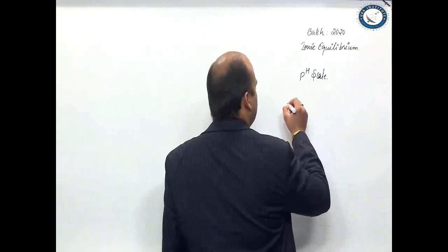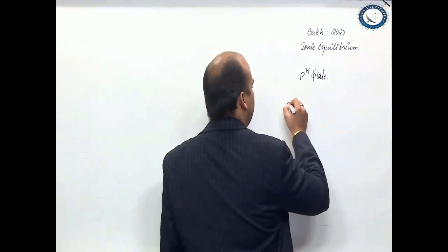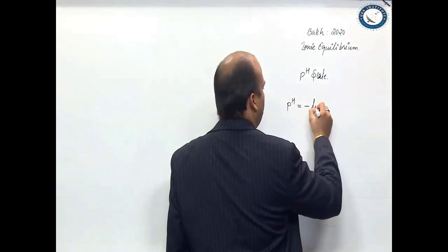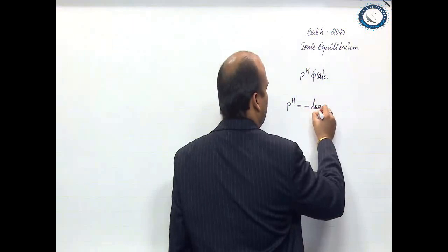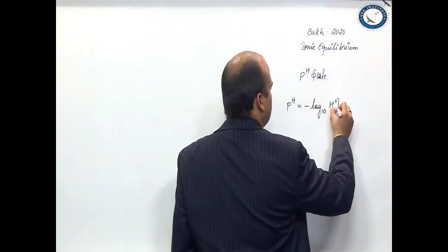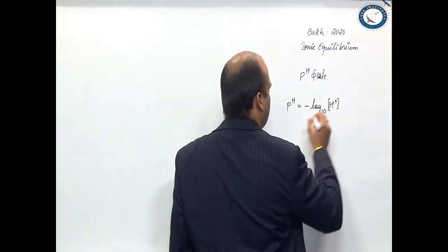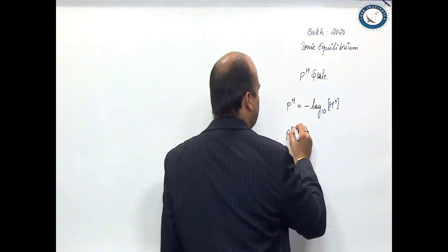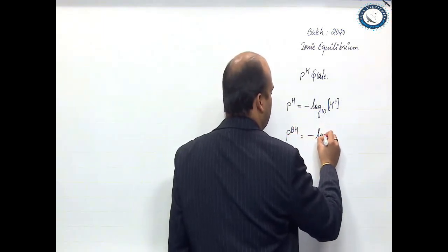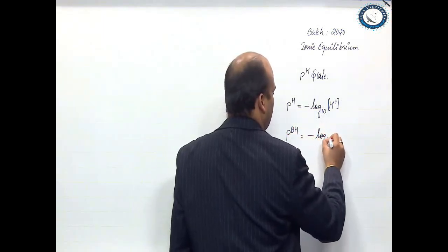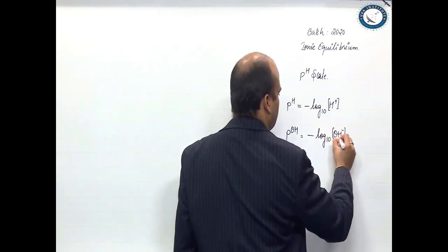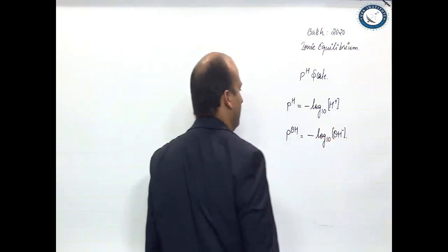Now, how do we calculate pH? pH can be calculated by the formula: negative log to the base 10 of H plus ion concentration. Similarly, pOH can be calculated as negative log to the base 10 of OH minus ion concentration.